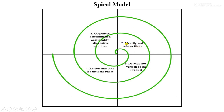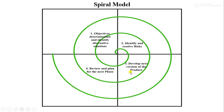In the second quadrant, that is identifying and resolving risks, we need to perform activities to identify risks associated with the project. The project may suffer from different types of risks. For example, if the customer requirement is not clear, then we can use the prototype model to solve that risk. So in the second quadrant, we need to identify different types of risks and resolve them.